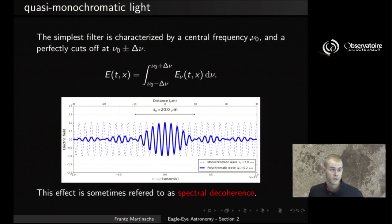The simplest filter is therefore characterized by a central frequency, nu_0, and a perfect cutoff at nu_0 plus or minus delta_nu, where delta_nu is a number that characterizes the thickness of the filter we're using.